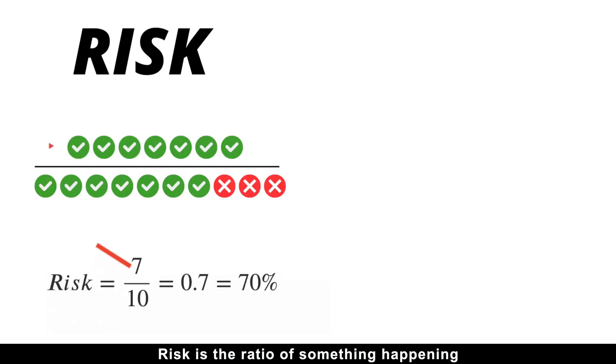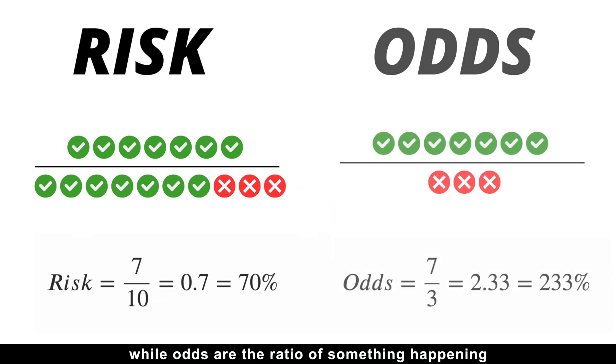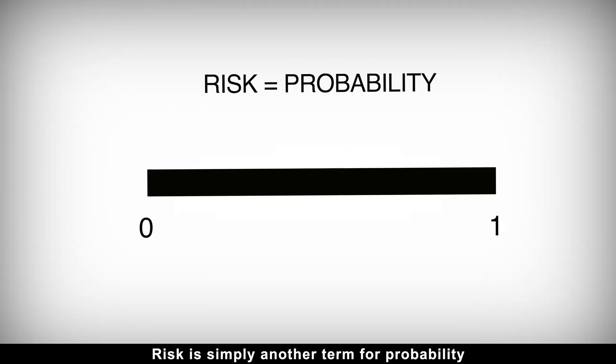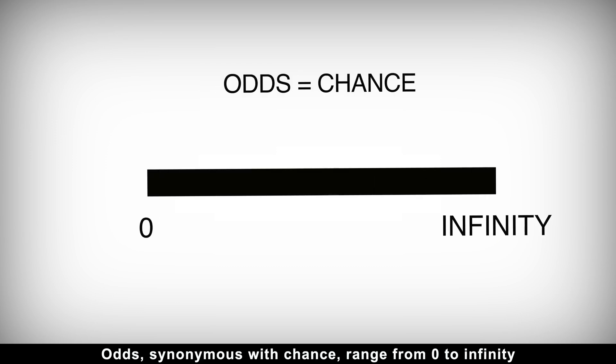Risk is the ratio of something happening to everything that could happen, while odds are the ratio of something happening to something not happening. Risk is simply another term for probability and is therefore a number between 0 and 1, or 0% to 100%.